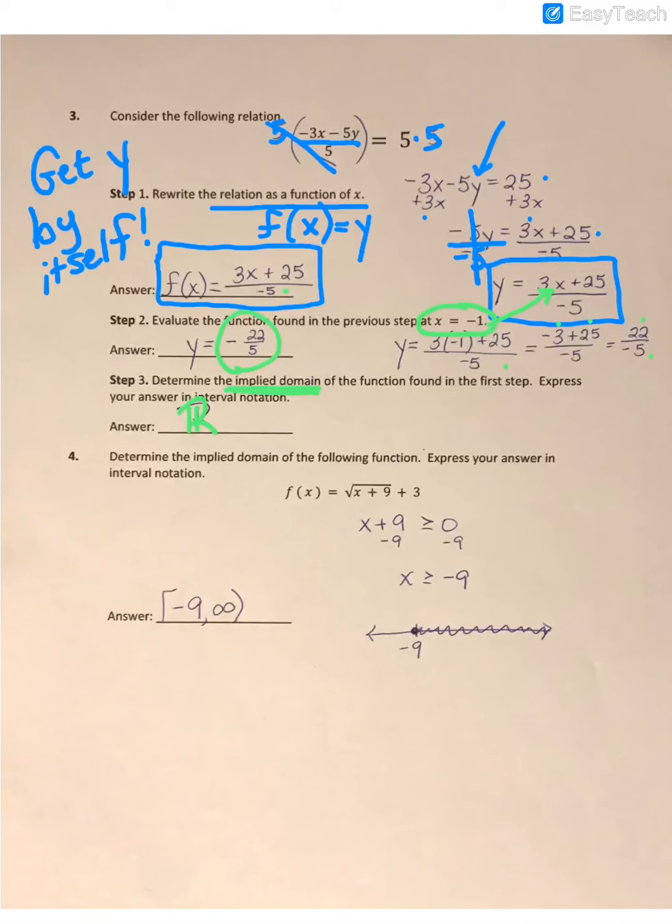On question 4, when we're trying to determine the implied domain and we're looking at a function with a square root, remember our focus is only on what's under the square root. So we're going to take that x + 9 that's under the square root...